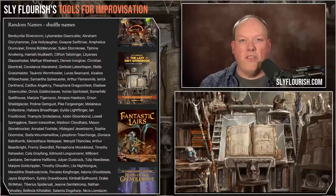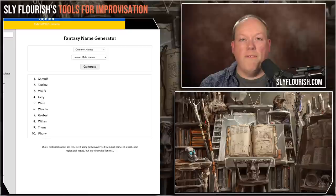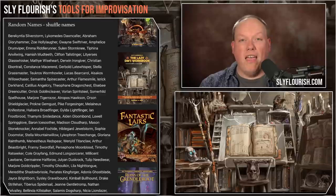There are a lot of different places that you can get these names. The Player's Handbook actually has names for all of the different character races, and Xanathar's Guide to Everything has a number of different tables to have names from all different kinds of cultures. One of my favorite websites, Donjon, has an excellent random name generator that I use all the time. You can also use fantasy name generators or any number of different random name generators that you can find on the internet.